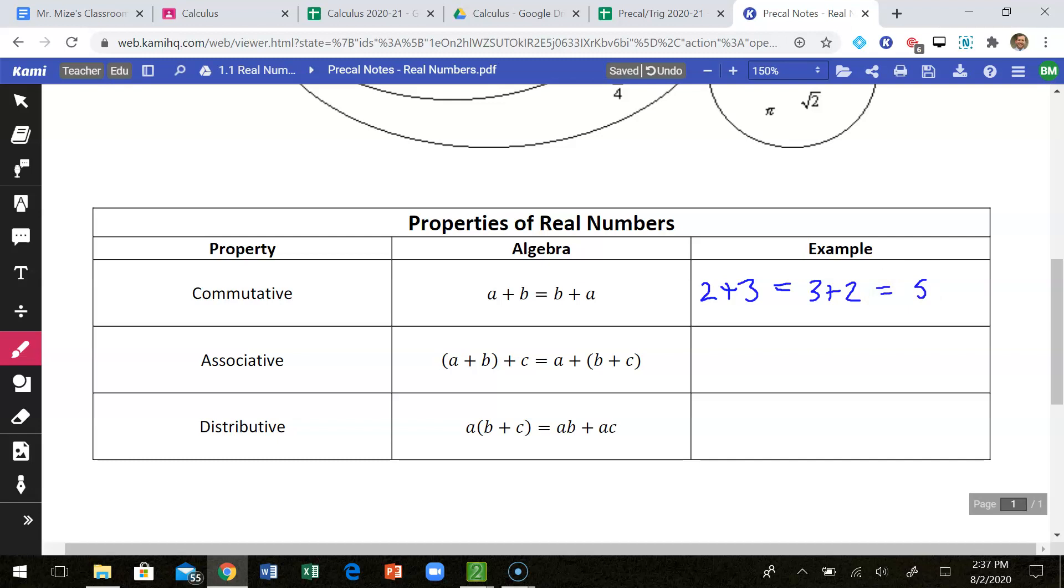The associative property says if I'm going to add three numbers together, it doesn't matter which two I add together first. As long as I add all three of them together, I'm going to get the same thing. So if I do 2 plus 3 and then I add 4, that should be the same as if I do 2 plus the sum of 3 and 4. So here I would have 5 plus 4, and over here I would have 2 plus 7. Both of those will equal 9.